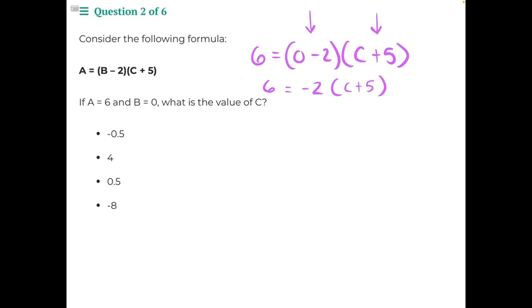Now we need to use distributive property to multiply negative 2 into C and into positive 5. So negative 2 times C would give us negative 2C. Negative 2 times positive 5 would give us a negative 10. And then bring down our equal sign and our 6.